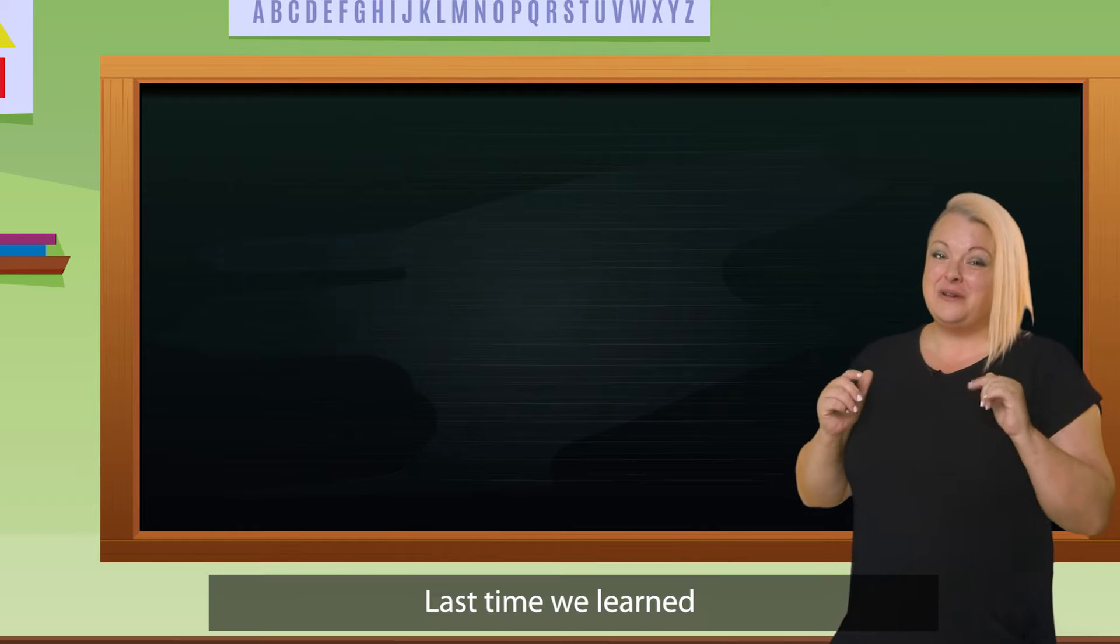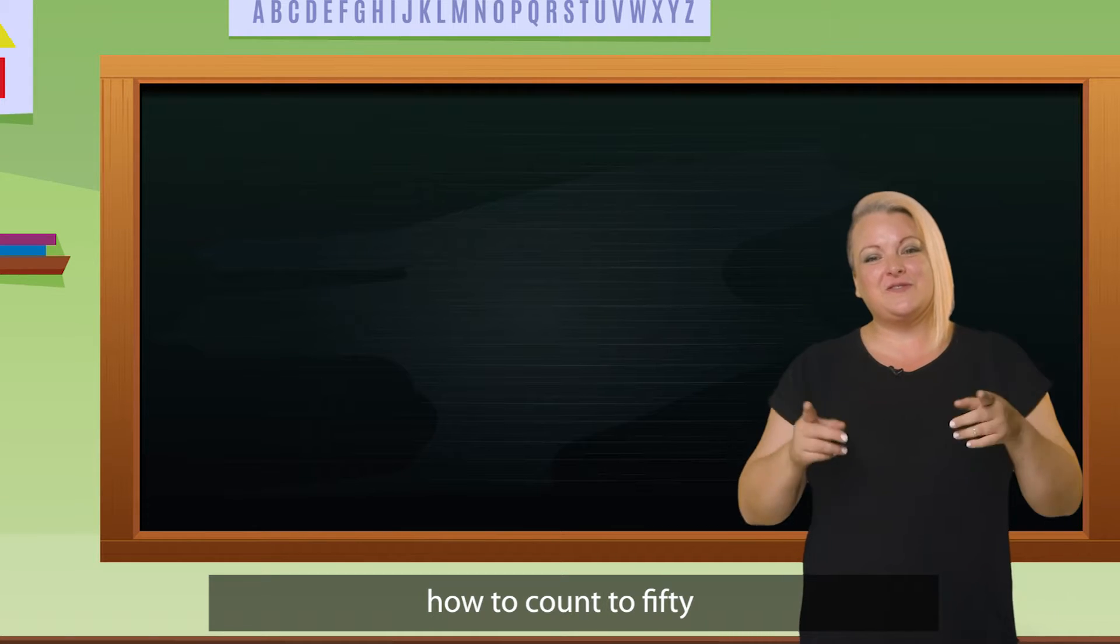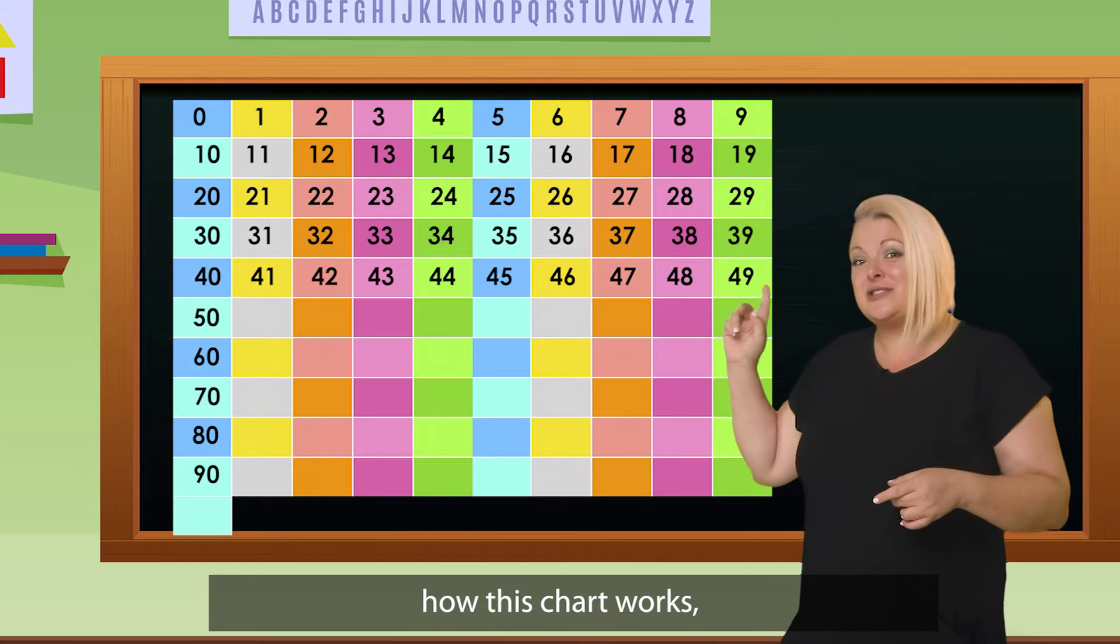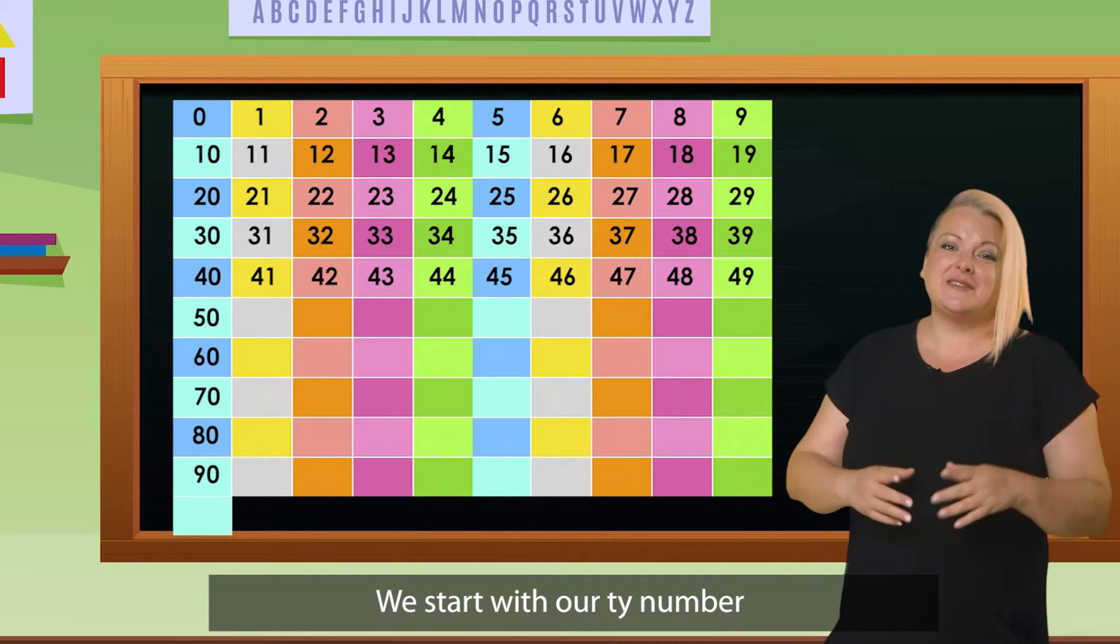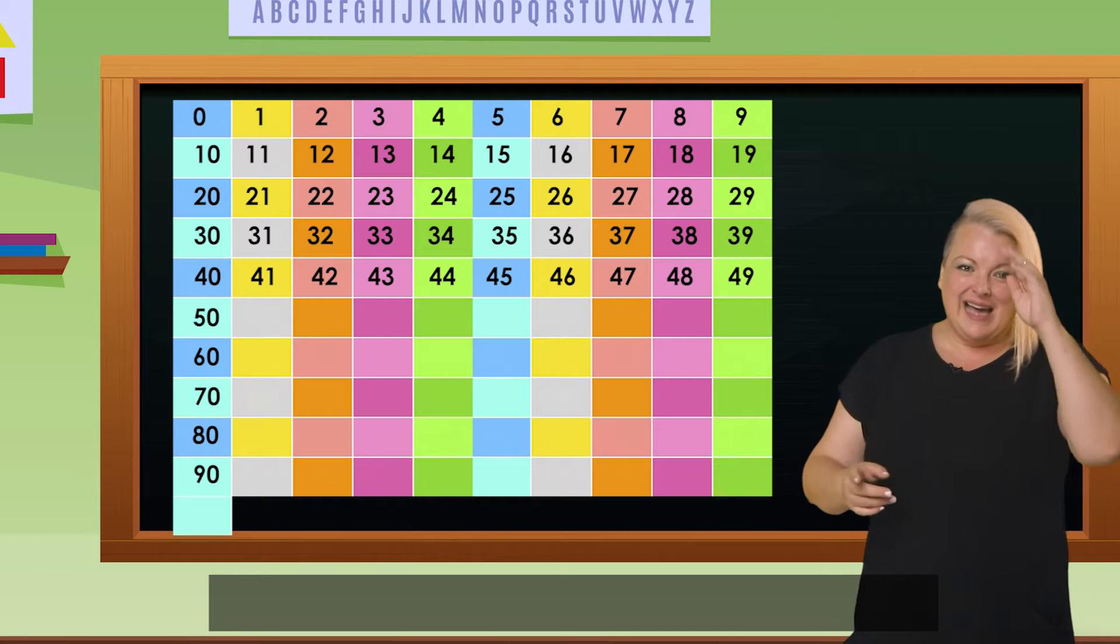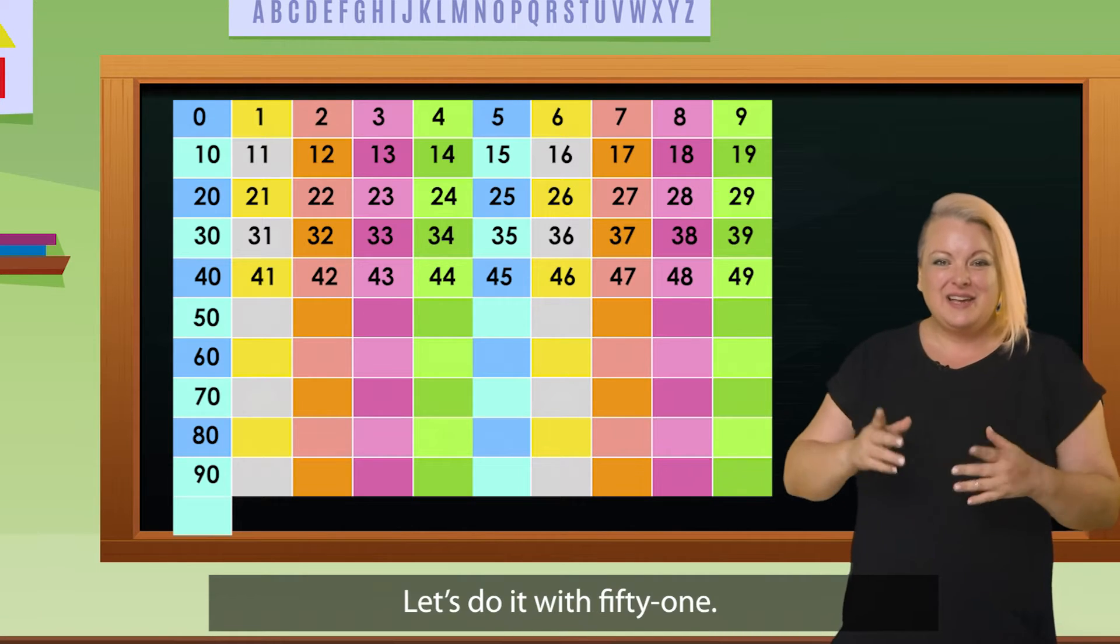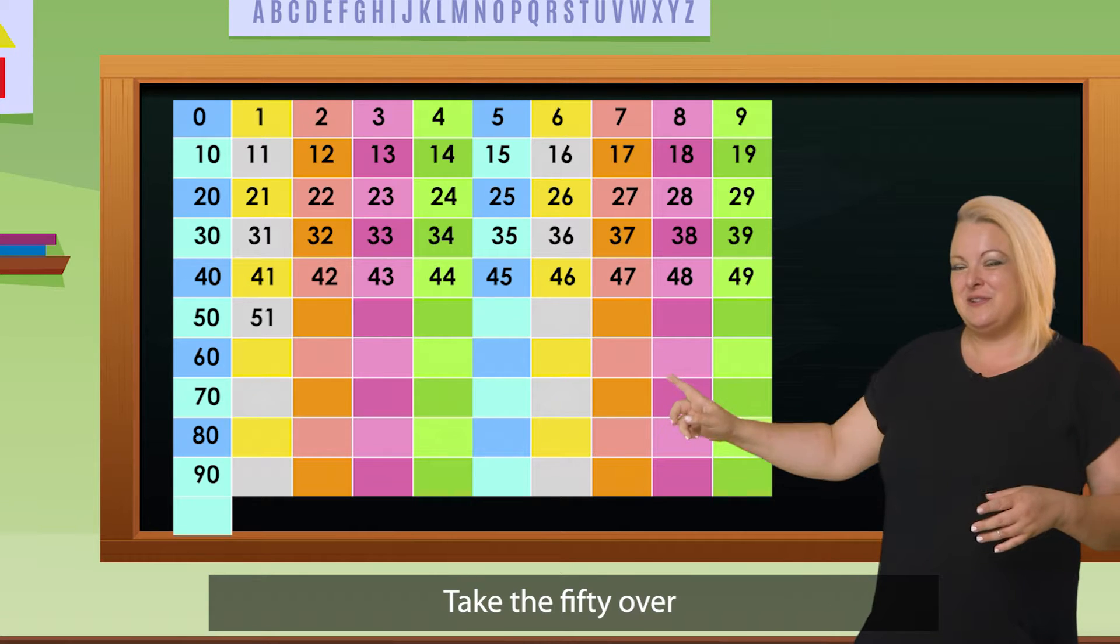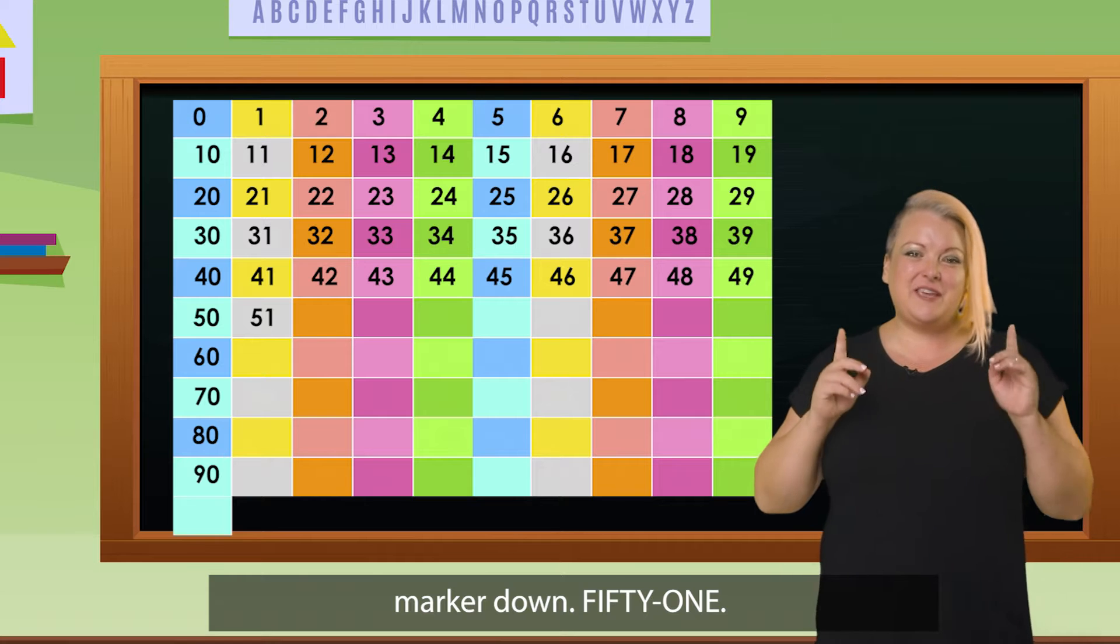Last time we learned all about how to count to 50 on our chart. You still remember how this chart works, don't you? We start with our tens number and then we drag our marker down. Let's do it with 51. Take the 50 over and then we bring the one marker down. 51.